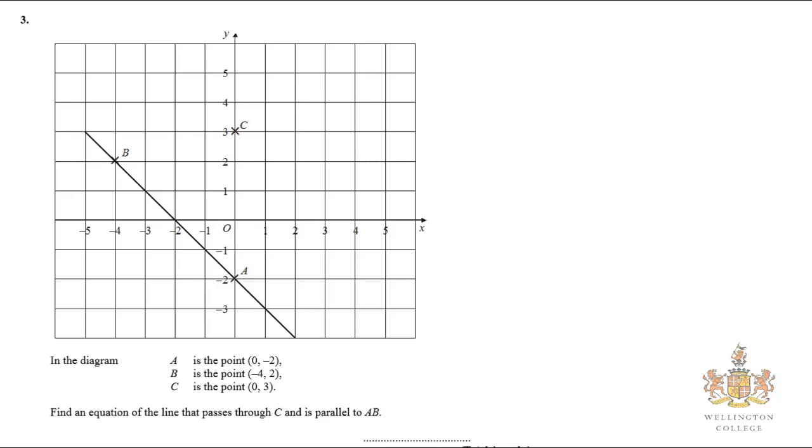In this question we have a diagram. We've got point A, point B, and point C. Find the equation of a line that passes through C and is parallel to AB.